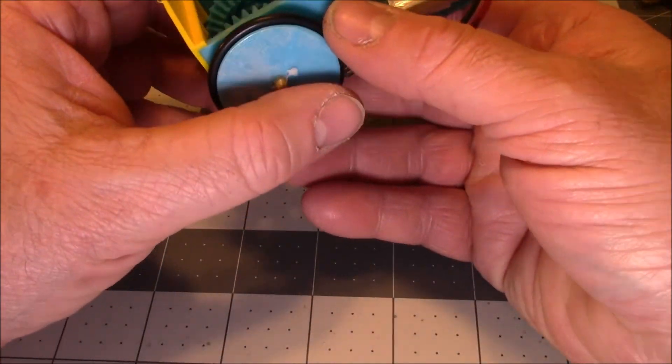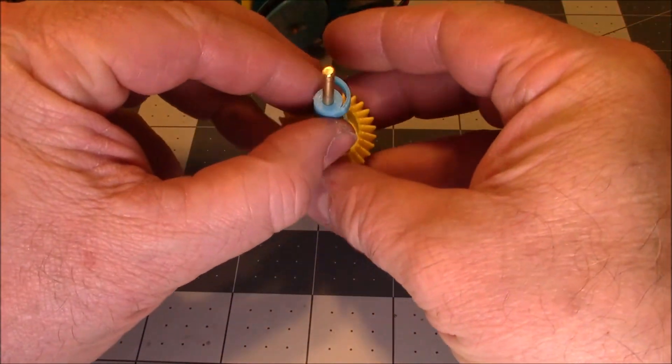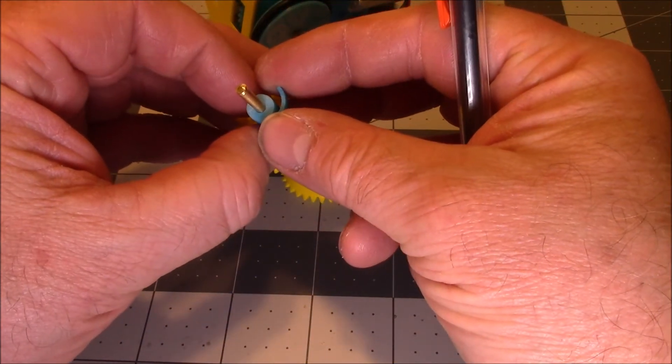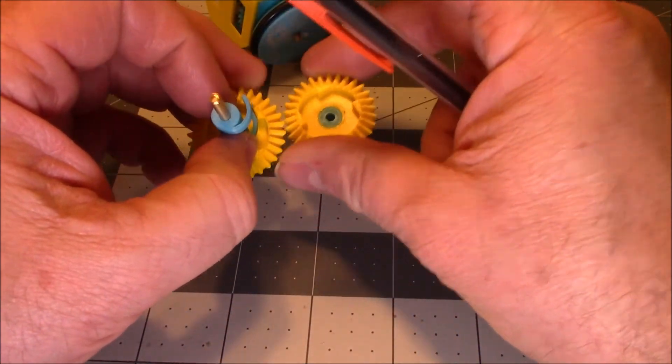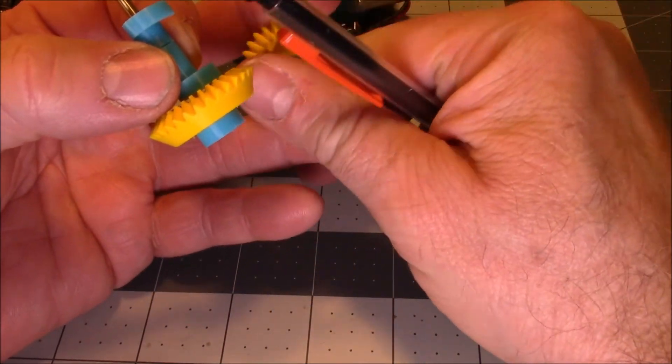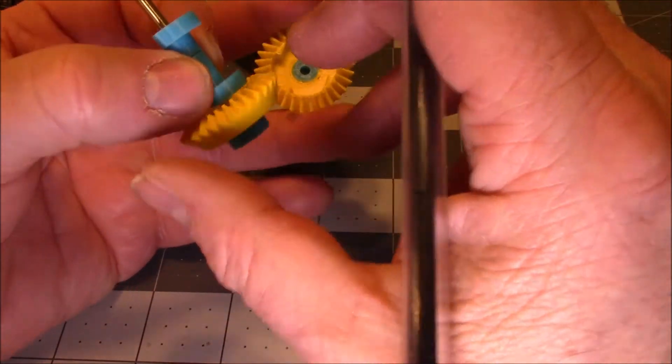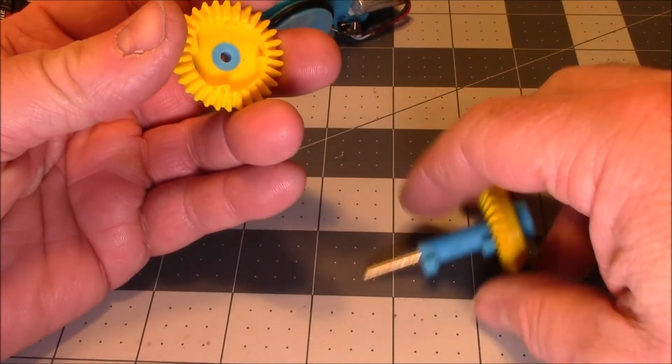I believe the reason for that is these ratchets are springy, and when they load up and then they release as they go over each of these parts. So I believe it's like a little hammer action. It actually drives that one wheel a little faster than the others.